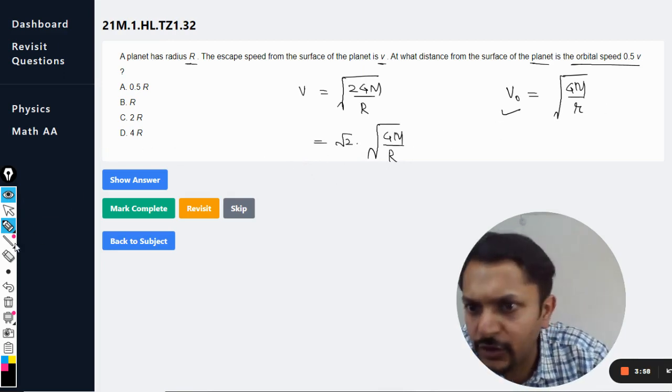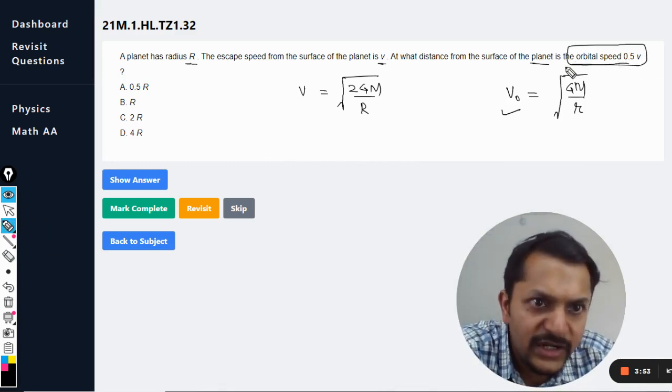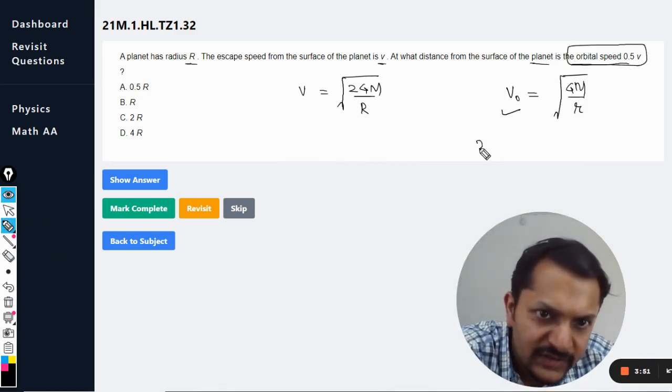0.5 times... okay I'm sorry, instead of doing this, you see this is given here - the orbital speed is 0.5v, so orbital speed has to be 0.5v.